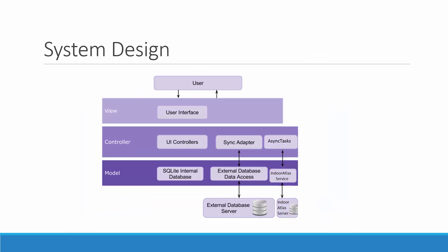This is the system design diagram. It's essentially the same as the previous iteration: we have a user who interfaces with the UI elements, and a UI controller with a sync adapter that synchronizes all information in the background. Now in the controller, we have asynchronous tasks running in the background that pull the IndoorAtlas service — the service that returns your indoor location with geo-coordinates using magnetic fields — which in turn also polls the IndoorAtlas service as shown in the figure.